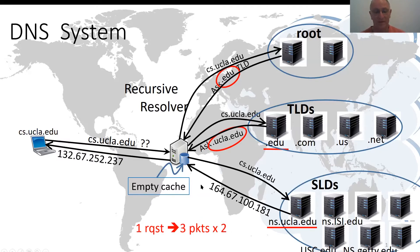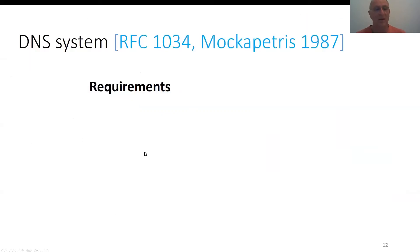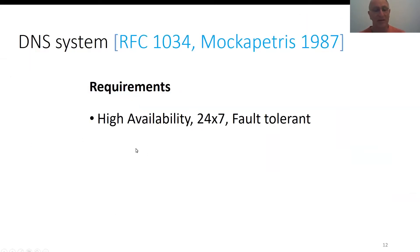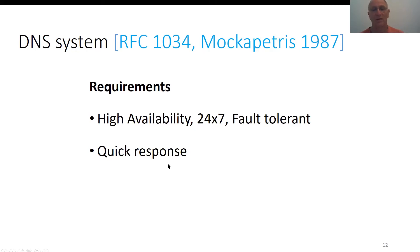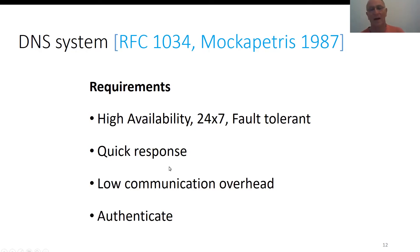We see three packet exchanges for one resolution request. The system has several requirements. The major ones are high availability — when it's not available, the affected parts cannot reach resources on the internet — quick response time, because any delay is added to the latency of reaching resources on the internet, high efficiency, and making sure the responses are authentic.